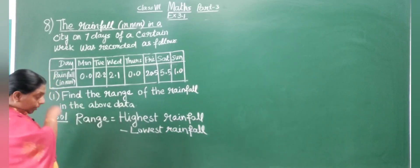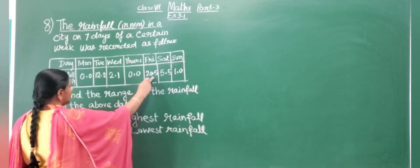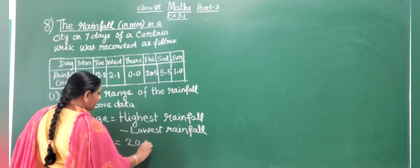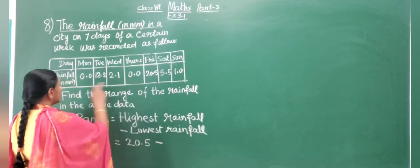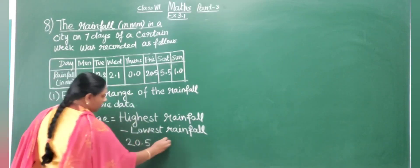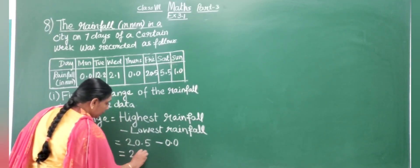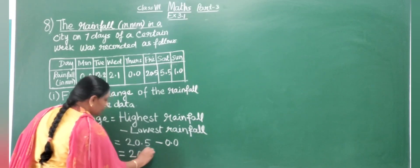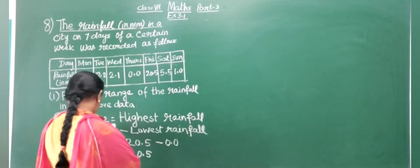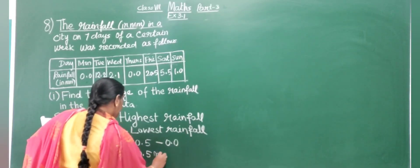The highest rainfall is 20.5 mm. The lowest is 0. So range equals 20.5 minus 0. The answer is 20.5 millimetres. Range equals 20.5 mm.